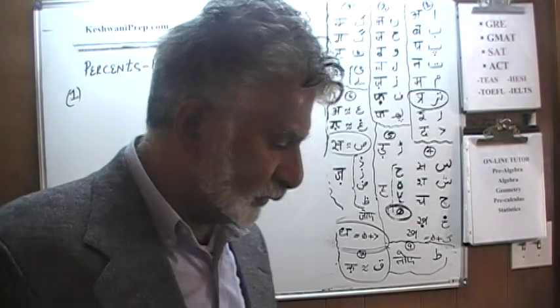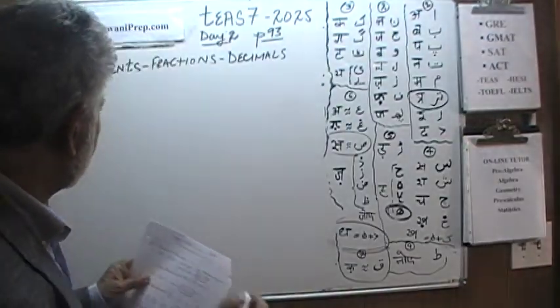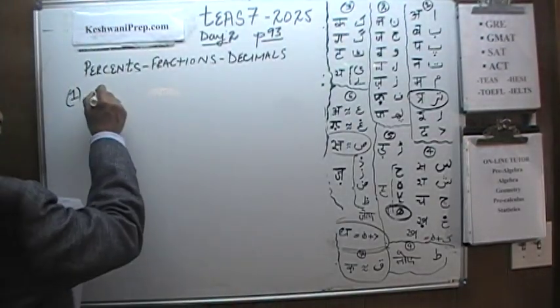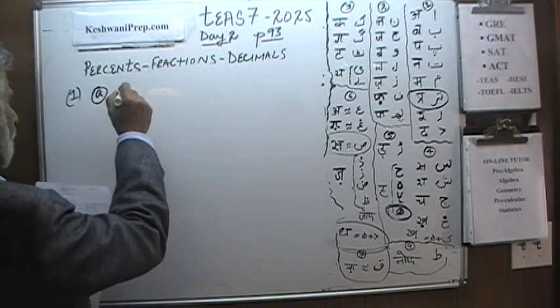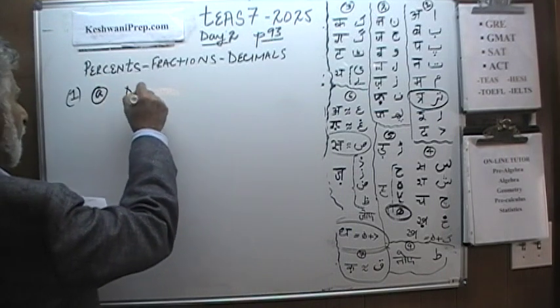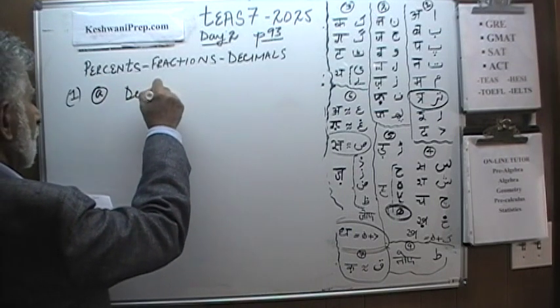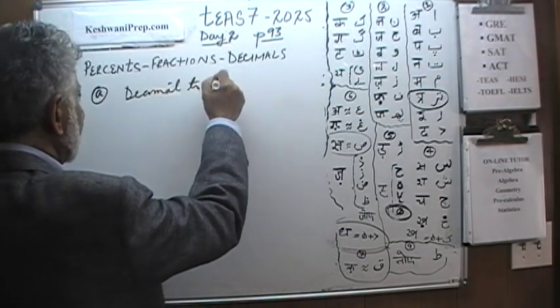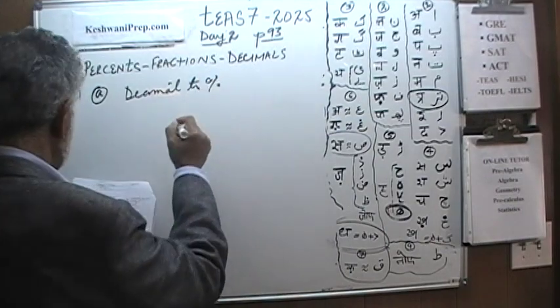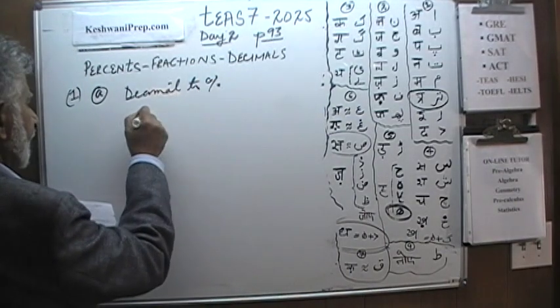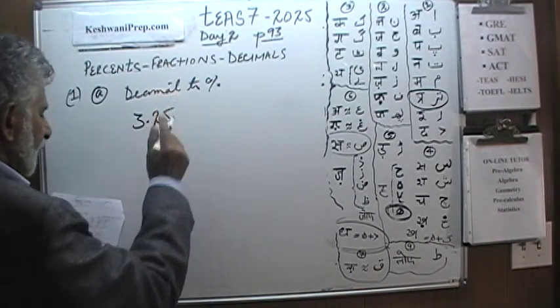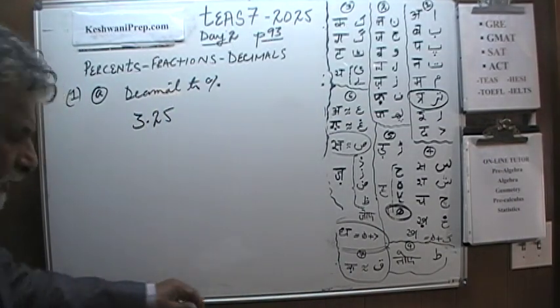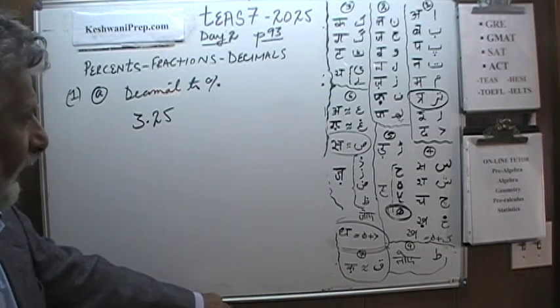Parts A, B, C, D, and so on. So here is the first one — Part A. We are being asked to convert a decimal to a percent, and the decimal given to us is 3.25.